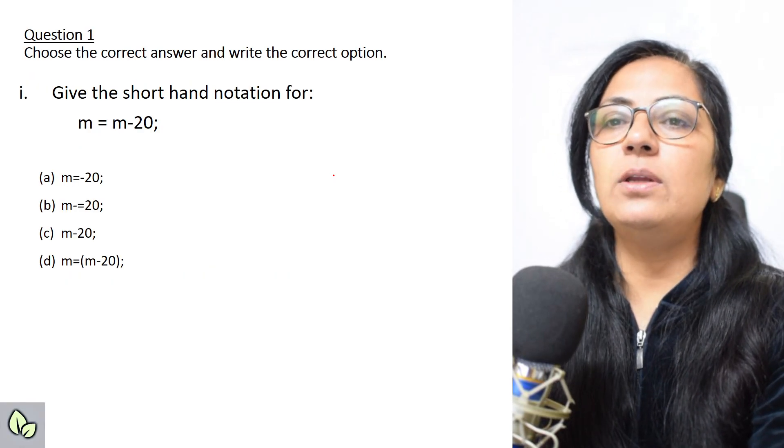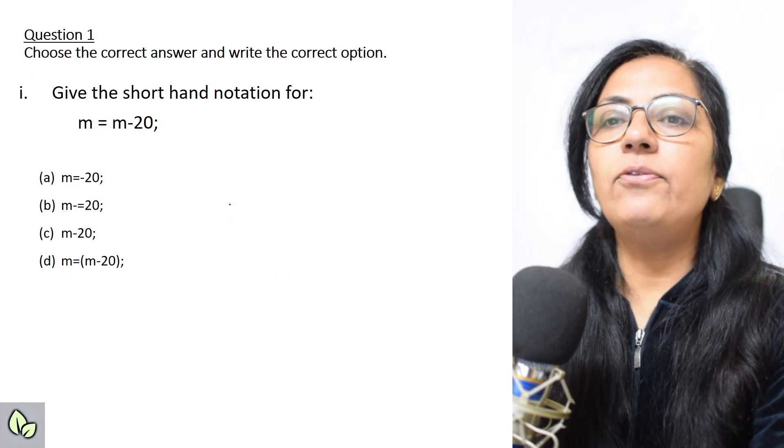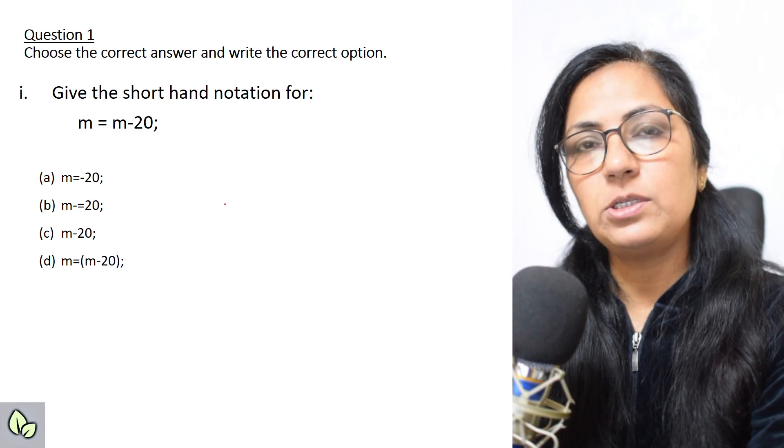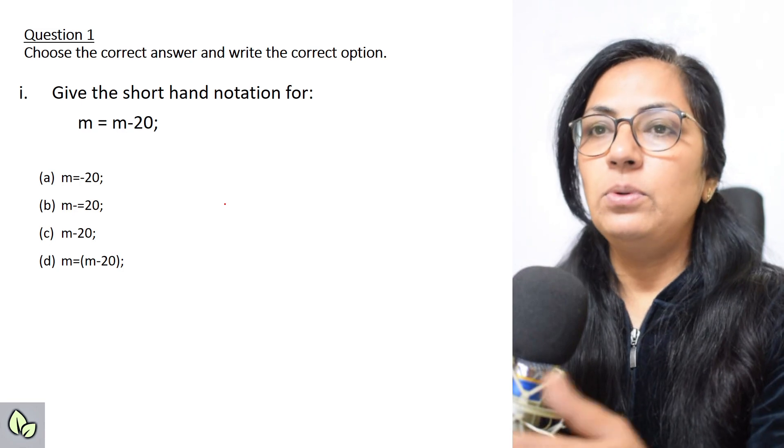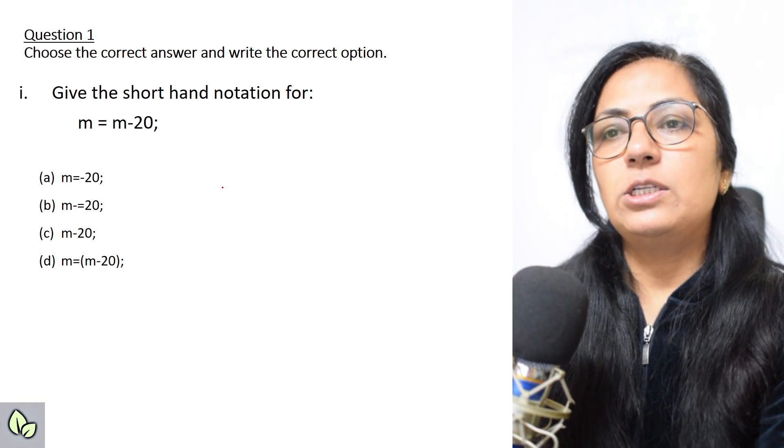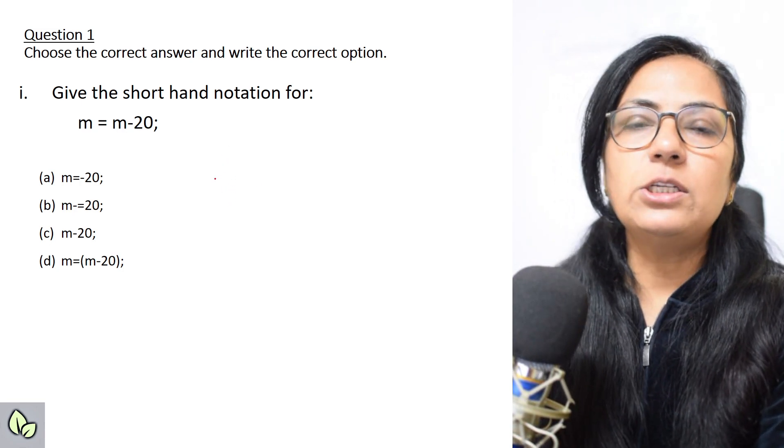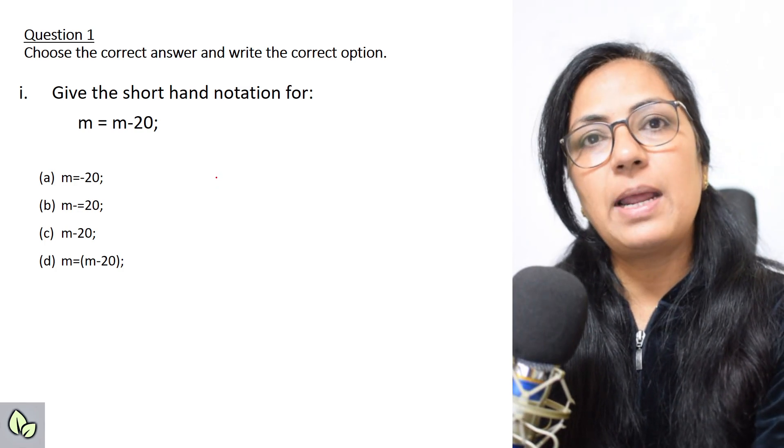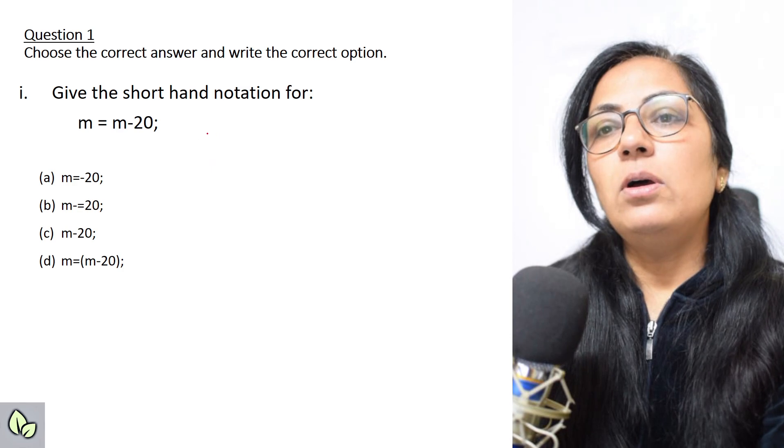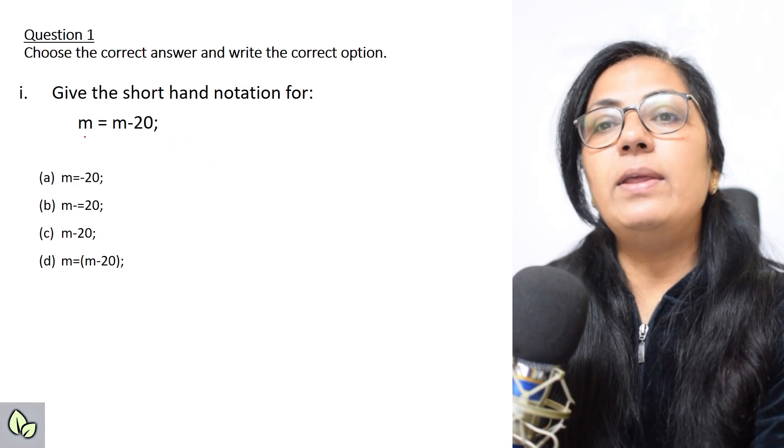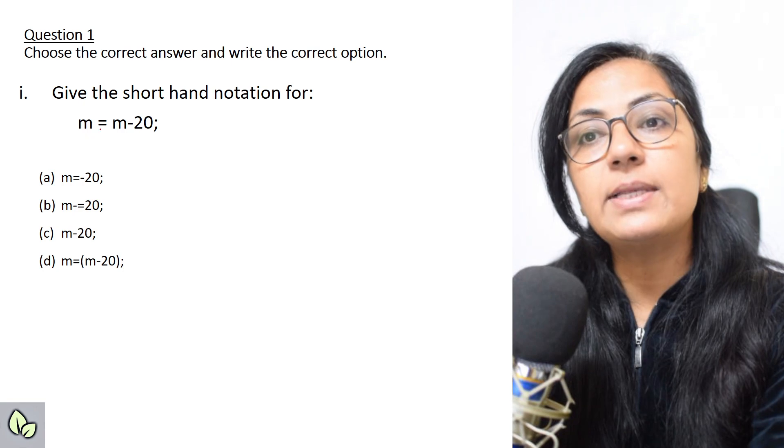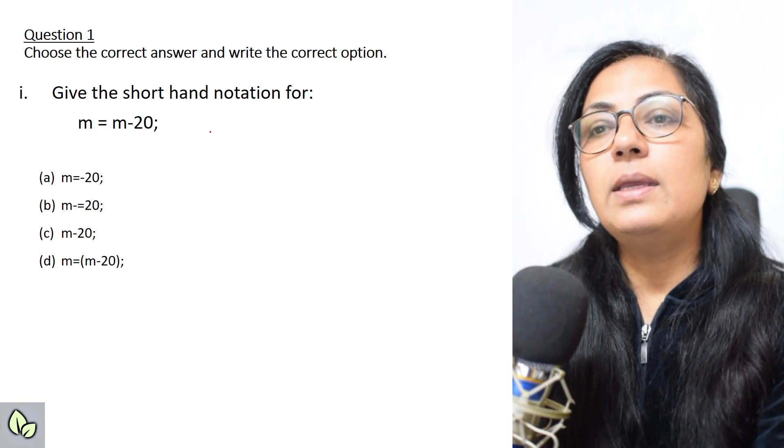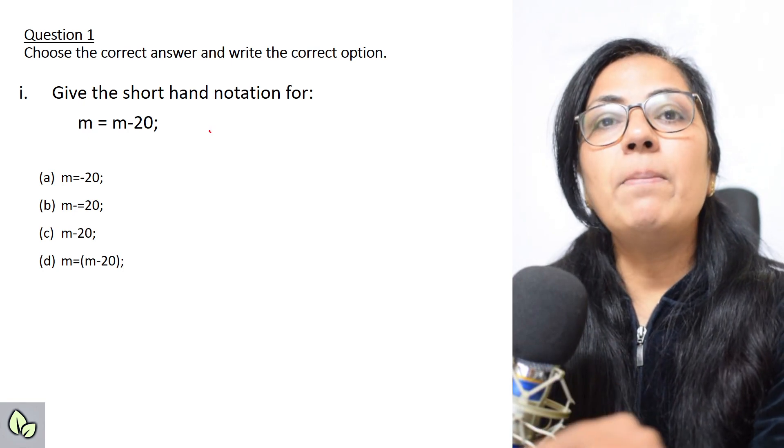The first question: give the shorthand notation for m equals m minus 20. For shorthand notation, the questions can come for multiplication, addition, subtraction, or division. The shorthand notation is possible only when the variable on the left side is present on the right side also.